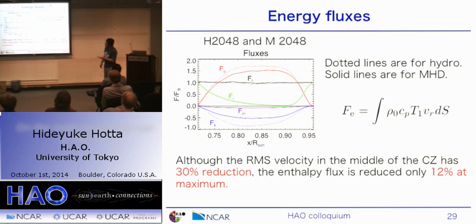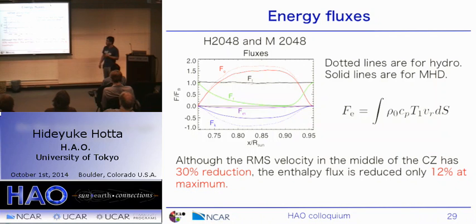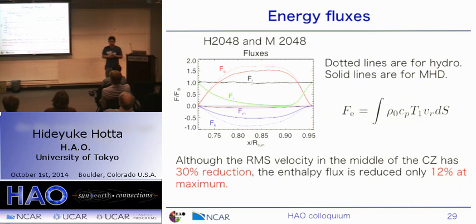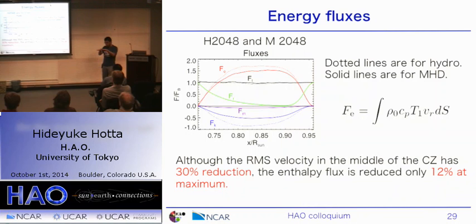Looking at the energy flux: the red line is the convective entropy flux, expressed as the entropy flux formula. The dotted line is the hydrodynamic case and the solid line is the MHD case. The RMS velocity is suppressed significantly — about 30% reduction in the middle of the convection zone — but the entropy flux is reduced only 12%. This is the opposite sense of the Yin-Yang calculation, where the enthalpy flux is more reduced than the RMS velocity when including magnetic fields. But in my calculation, the convection is reduced but the energy flux is not so reduced. Since V_r is reduced but rho_0 and Cp are the same, the temperature perturbation T_1 must be increased.